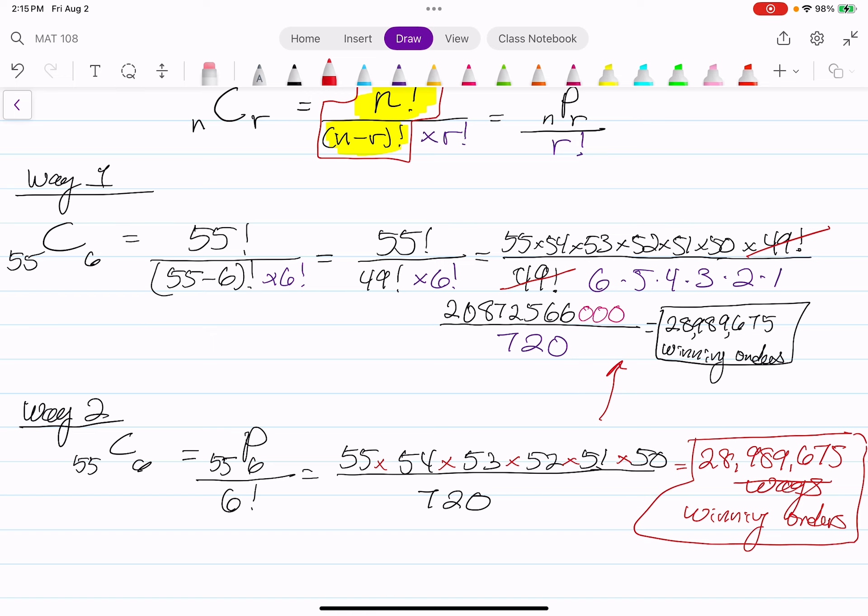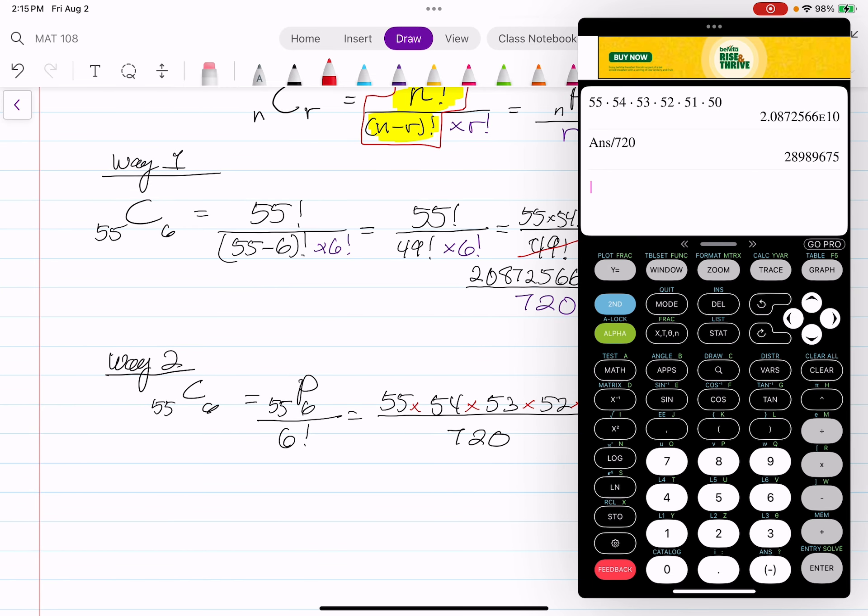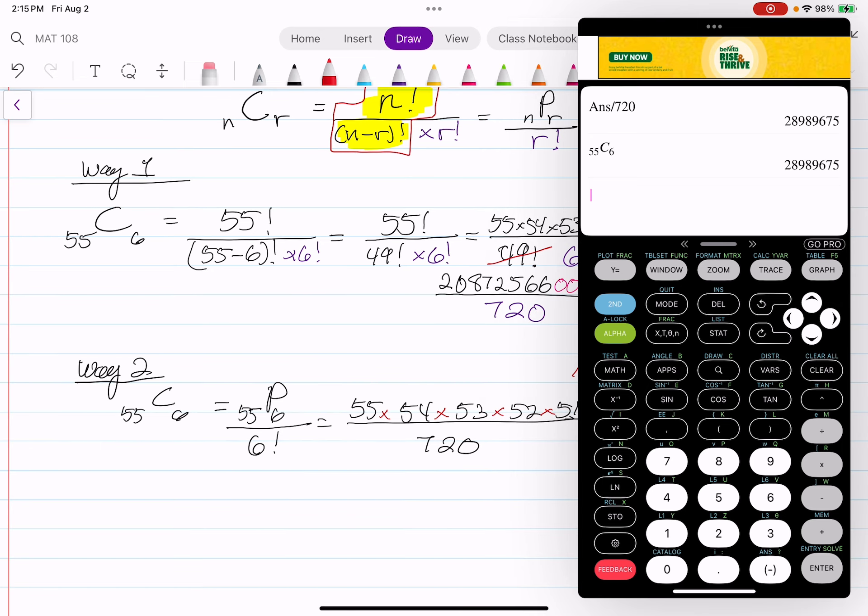And of course way number three is the calculator. So usually you type in your number first, your 55. You go to your math and PRB button, you go over to choose combinations, and then after that you put in 6. You hit enter. My calculator is a little bit different so in this case I'm going to go to math, automatically go over to PRB and pick on nCr. And in this one I can put the 55 and the 6. But in your case you must put the 55 first then go to PRB then hit combination then put in the 6. And we just showed the answer is the same.